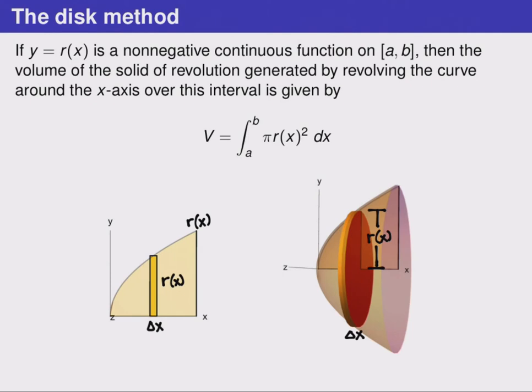This is called the disk method because the cylinder shape can also be called a disk, like the shape of a coin or a poker chip.